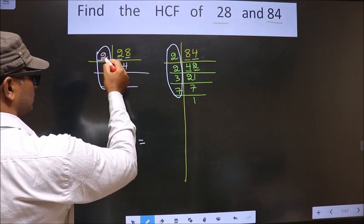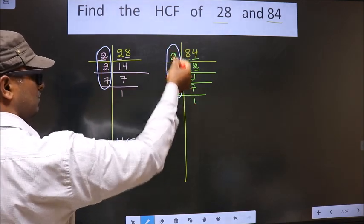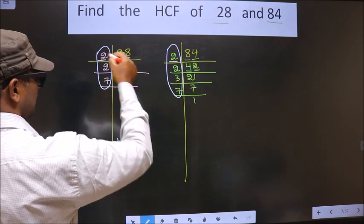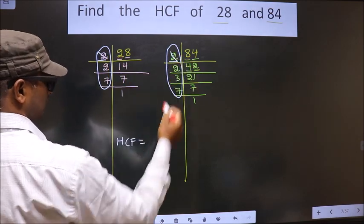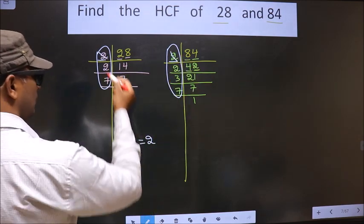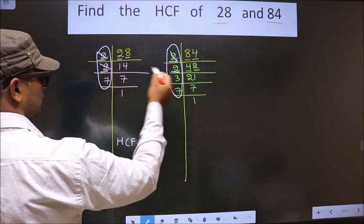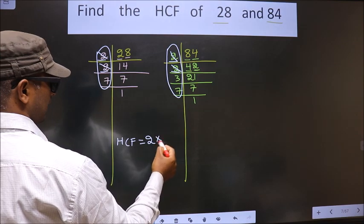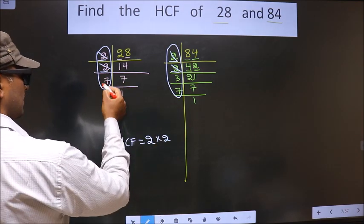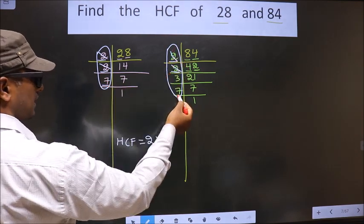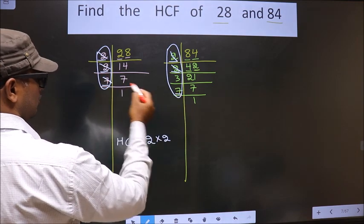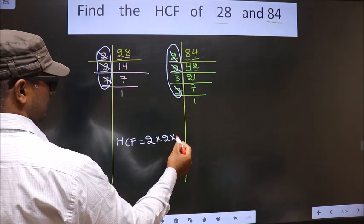So let us find, starting with the number 2. Do we have 2 here? Yes, so you cut 2 and write here. Now next number is 2. Do we have 2 here? Yes, so you cut 2 and write here. Next number is 7. Do we have 7 here? Yes, so you cut 7 and write here.